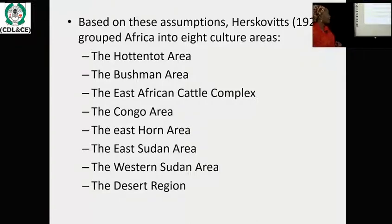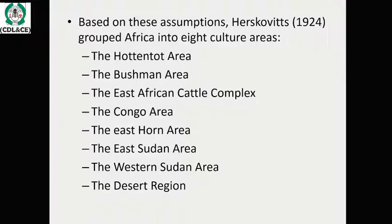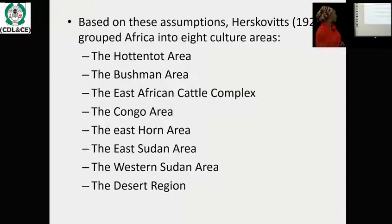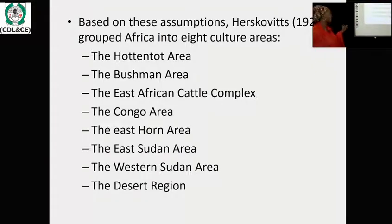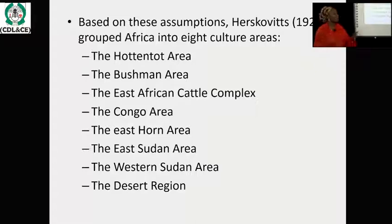Today we are going to continue with Herskovits' eight cultural areas: the Hottentot area, the Bushman area, the East African Cattle Complex, the Congo area, the East Horn area, the East Sudan area, the Western Sudan area, and the Desert region.